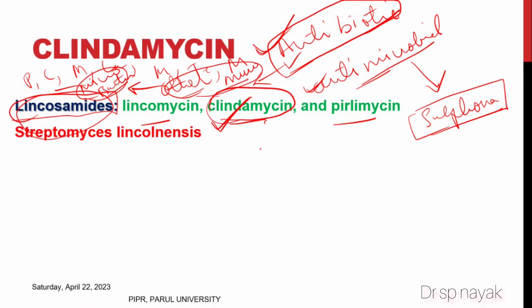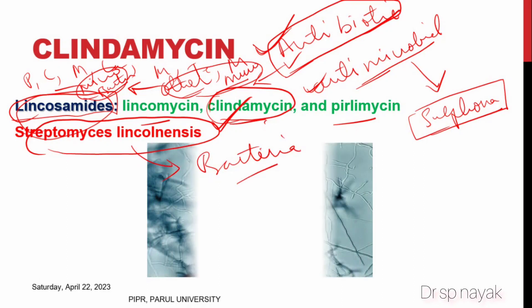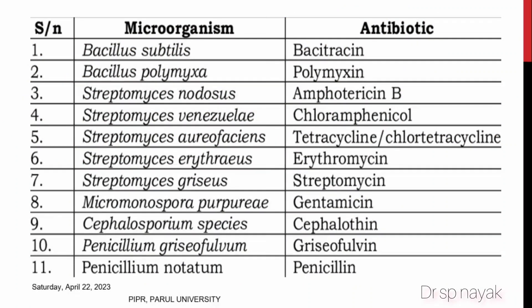Since clindamycin is an antibiotic, it must be obtained from another microorganism. Clindamycin is obtained from Streptomyces lincolnensis — this is the bacterium from which clindamycin is derived.